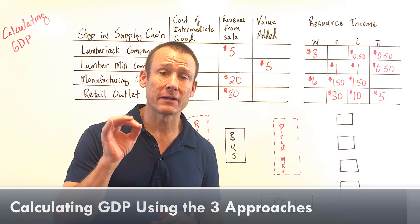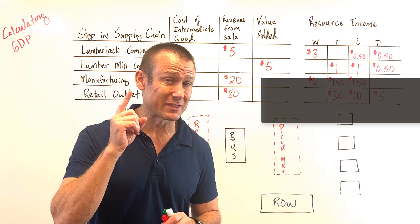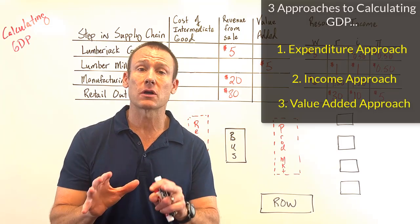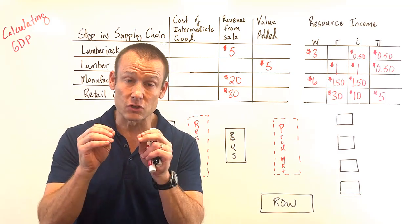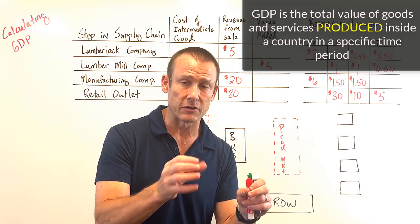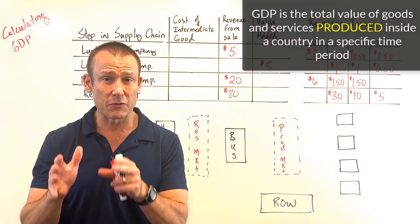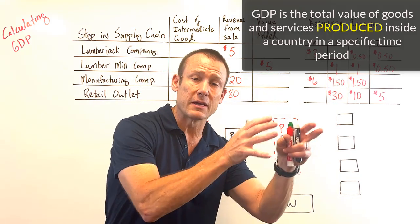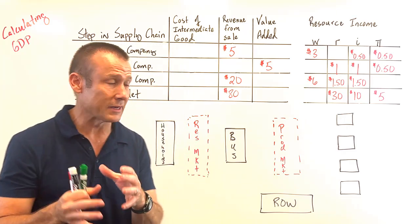In this video we are calculating GDP, and there are three different ways to do it: the expenditure approach, which is the spending approach; the income approach; and the value-added approach. Before we get into it, let's talk about what GDP is — it's the total value of goods and services produced in some geographic area, usually a country, within a specific time period, usually a quarter or a year.